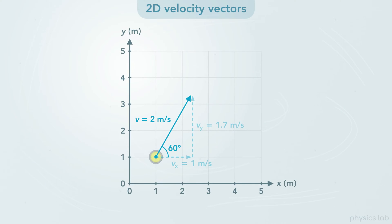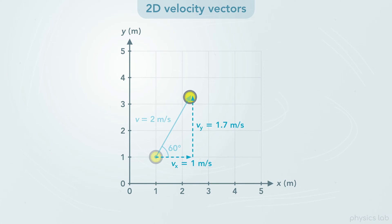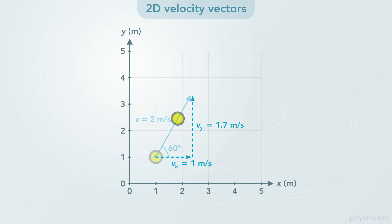So, this stone is moving at 2 meters per second at an angle of 60 degrees. But these components tell us that the stone is moving to the right at 1 meter per second, and up at 1.7 meters per second.